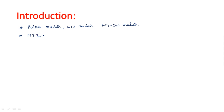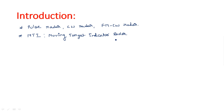MTI stands for Moving Target Indicator. By seeing the name itself we can understand the purpose — this radar system is used to identify moving targets, not stationary targets. Stationary targets are filtered out. MTI radar concentrates only on moving targets; it eliminates the stationary targets and indicates only moving targets when detecting objects.